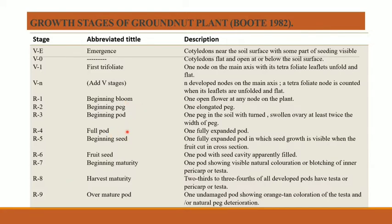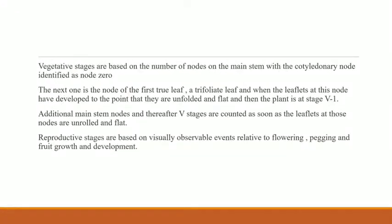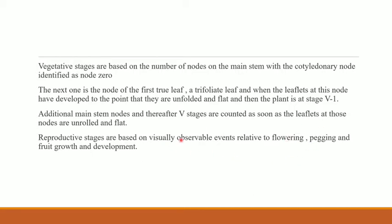The reproductive growth stages include: bloom type, pod, full pod stage, beginning seed stage, fruit seed, beginning maturity, and harvest maturity over pod. Vegetative stages are based on number of nodes on the main stem, with cotyledonary nodes counted. The node of the first true trifoliate leaf occurs at V1 stage. Reproductive stages are based on visually observable events like flowering, pegging, and fruit growth and development.